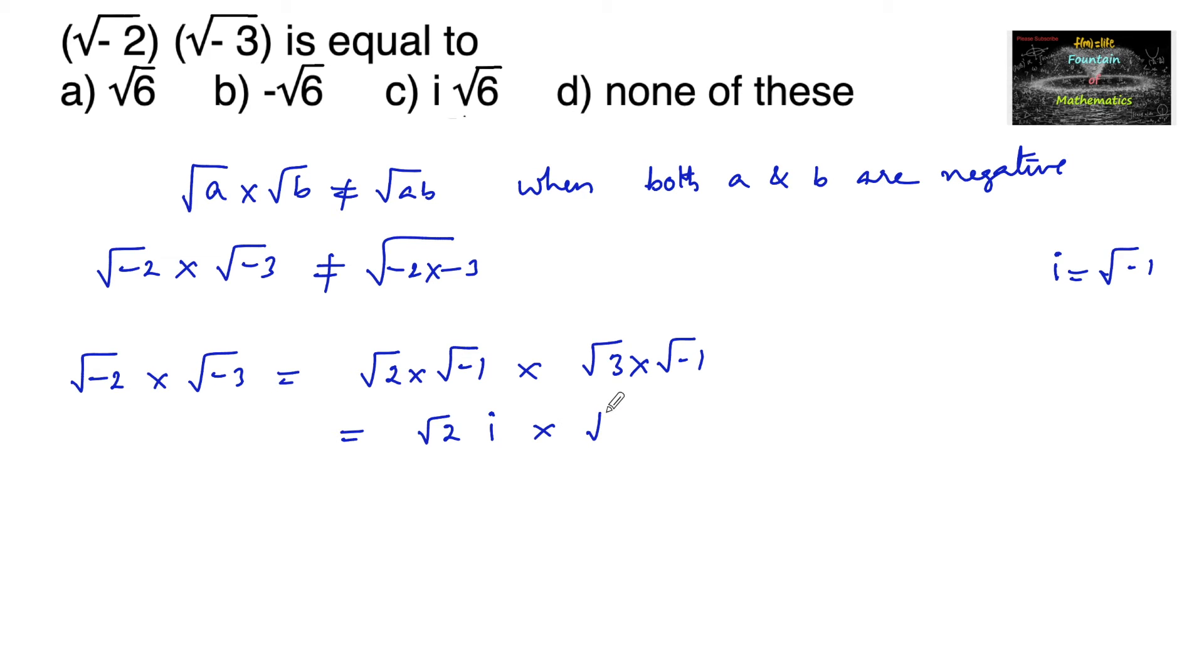...into root 3 into i. So that is root 2 into root 3, i into i, which is i squared. We have i squared equals minus 1, so we can also write root 2 into root 3. We can use the property since both are positive.